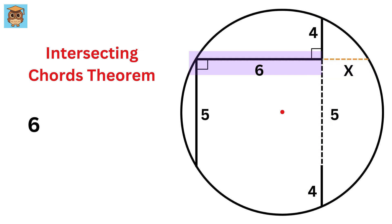this length, which is 6, times this length, which is x, will be the same as this length, which is 4, times this length, which is 5 plus 4, or 9. So x will be 6.